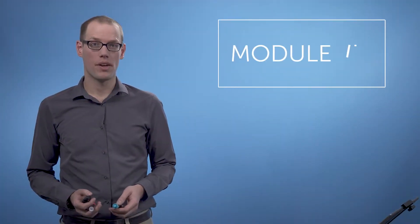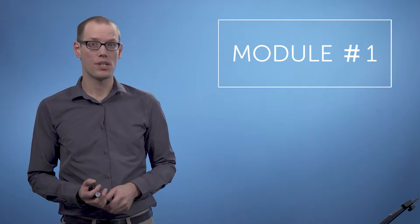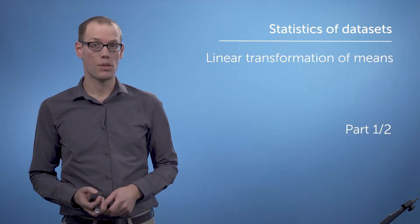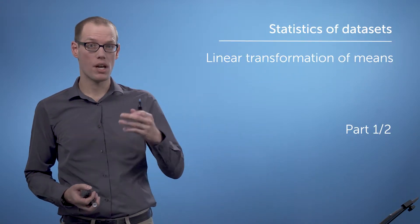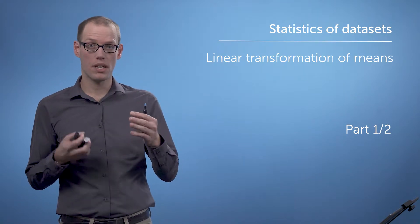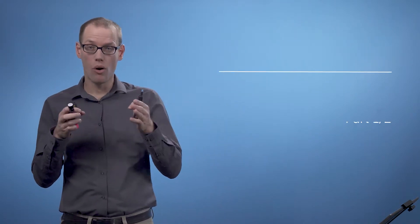Previously we looked at means and variances to describe statistical properties of data sets. In this video we'll discuss what happens to means and variances when we linearly transform the data set. That means we shift it around or stretch it.